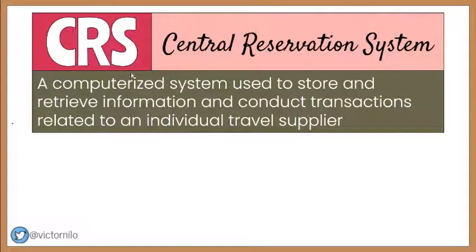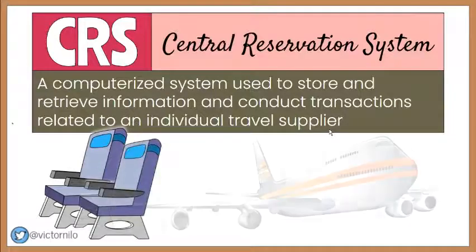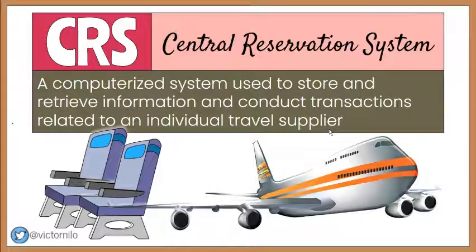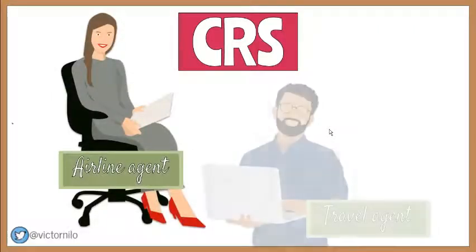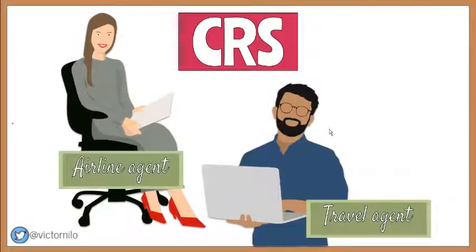Let's find out the difference between CRS and GDS. CRS is an electronic system used to prompt sales and provide fast and accurate information about the availability, prices, and bookings of an individual travel supplier's product or service. It was originally designed and employed by airlines for flight ticket reservations. Nowadays, CRS is used to store and distribute information to the public either directly or through intermediaries like travel agencies, which also allow reservations to be made.